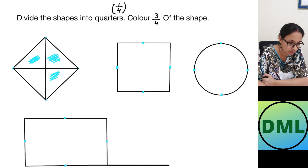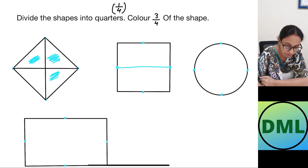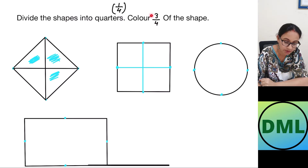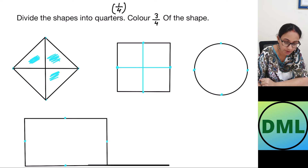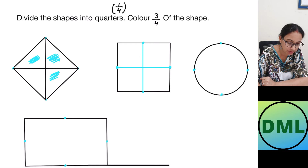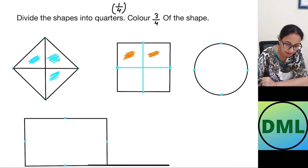Let's look at the next shape — this is our square again. I divide it in the middle and join in the middle. I have to color three by four — out of four parts, I color three parts: this part, this part, and this part.